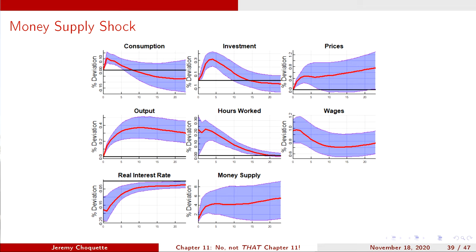An increase in the money supply ultimately leads to an increase in labor demand — therefore more people work at higher real wages. That's not what the RBC model predicts at all. The RBC model completely falls apart here too. The only thing the RBC model predicted for a money supply increase — aside from the money supply going up — is that prices would go up. Prices do go up, but not enough immediately to prevent changes in real variables.